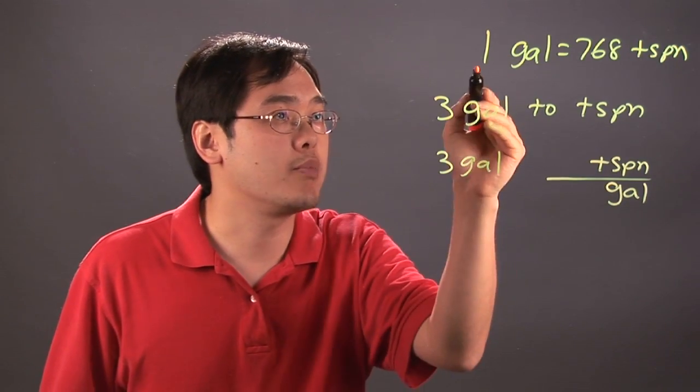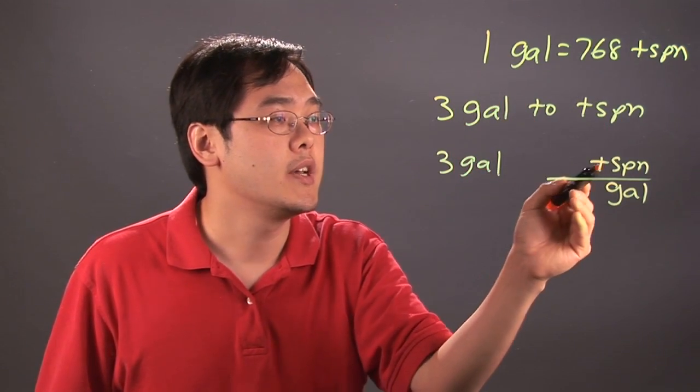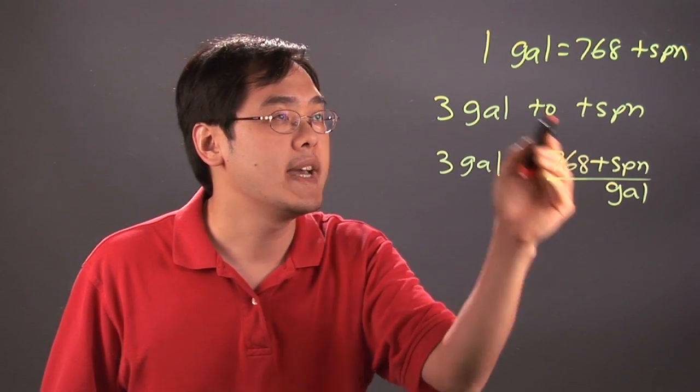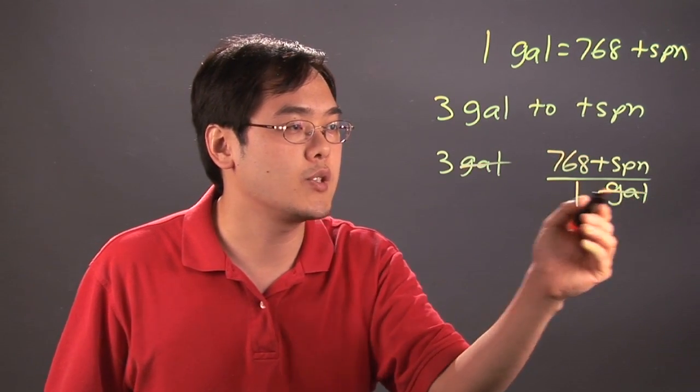Now, what you want to do after that is plug in the numbers that correspond to it. So teaspoons is 768, so 768 goes on top. Gallons, you have the 1. The gallons will cancel.